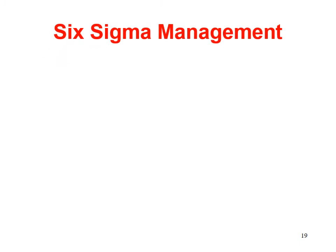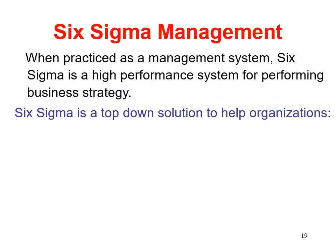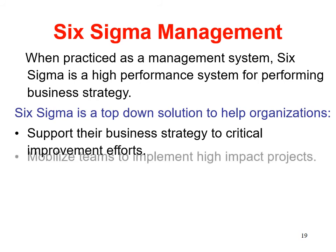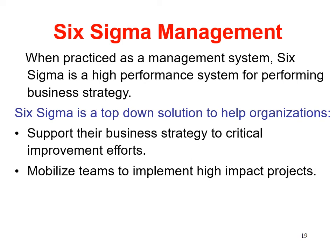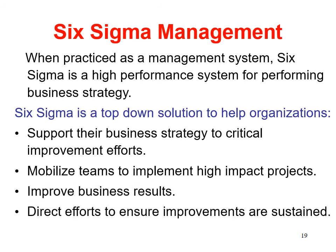Six Sigma Management. When practiced as a management system, Six Sigma is a high-performance system for executing business strategy. It is a top-down solution to help organizations align their business strategy to critical improvement efforts, mobilize teams to implement high-impact projects, improve business results, and direct efforts to ensure improvements are sustained.